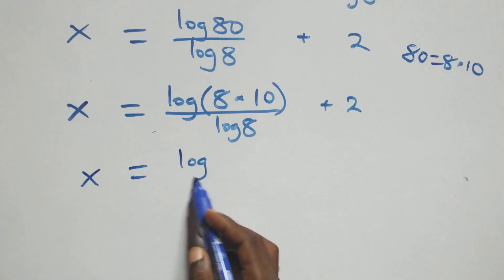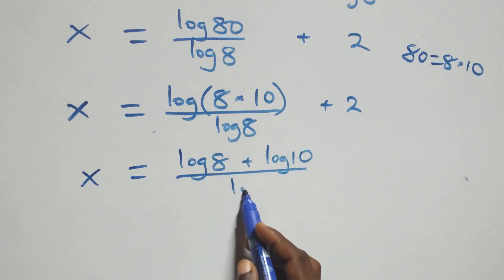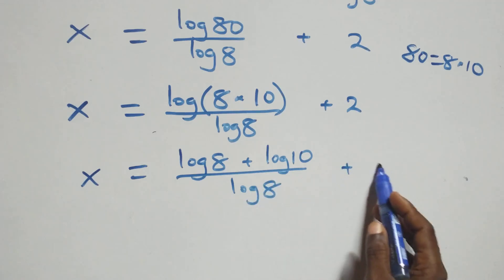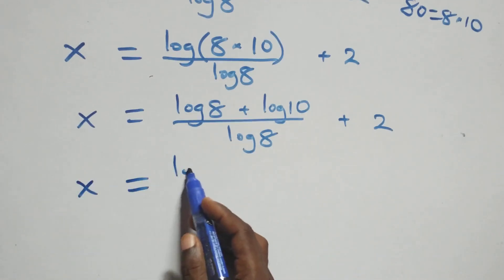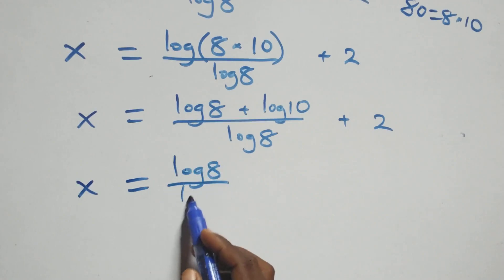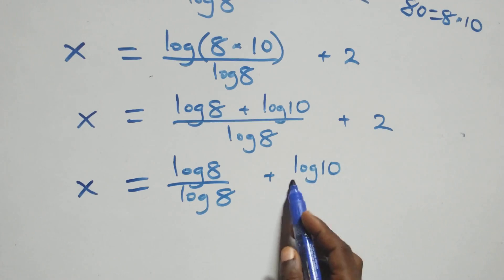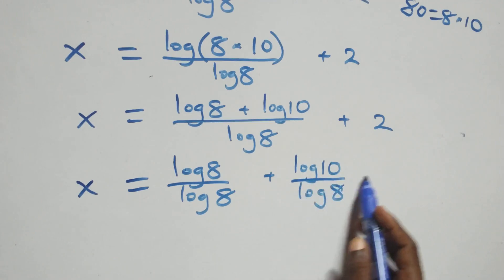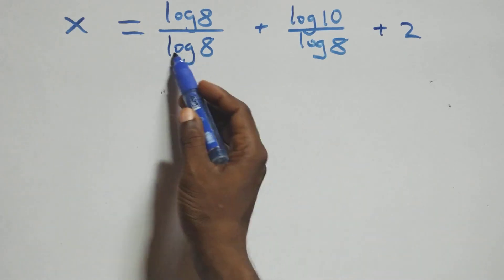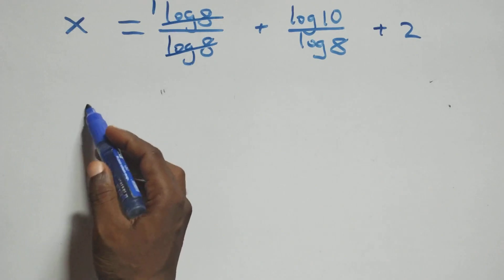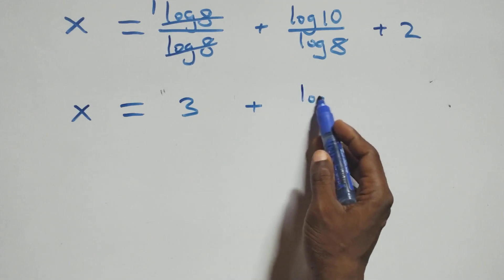We apply the law of logarithm, giving x equals (log 8 plus log 10) over log 8 plus 2. We separate this into two fractions: x equals log 8 over log 8 plus log 10 over log 8 plus 2. The log 8 over log 8 cancels to 1, so x equals 1 plus log 10 over log 8 plus 2, which gives x equals 3 plus log 10 over log 8.